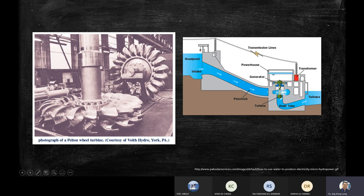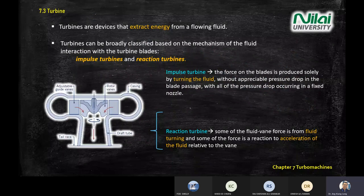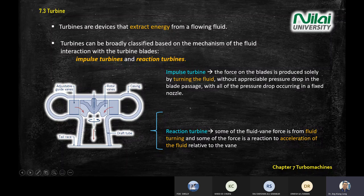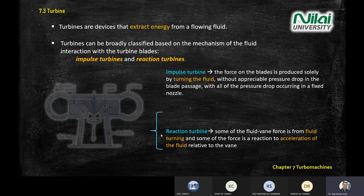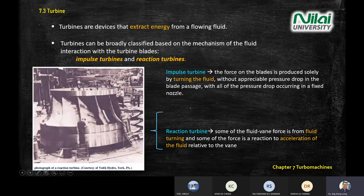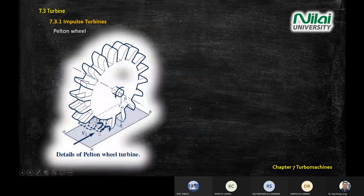In the Pelton wheel, the fluid turns the impeller, generating mechanical movement which is then converted to electrical energy. The other main type is the reaction turbine. Looking at its cross-section, water is channeled in, pushes the blade and impeller, and is then discharged to another loop.